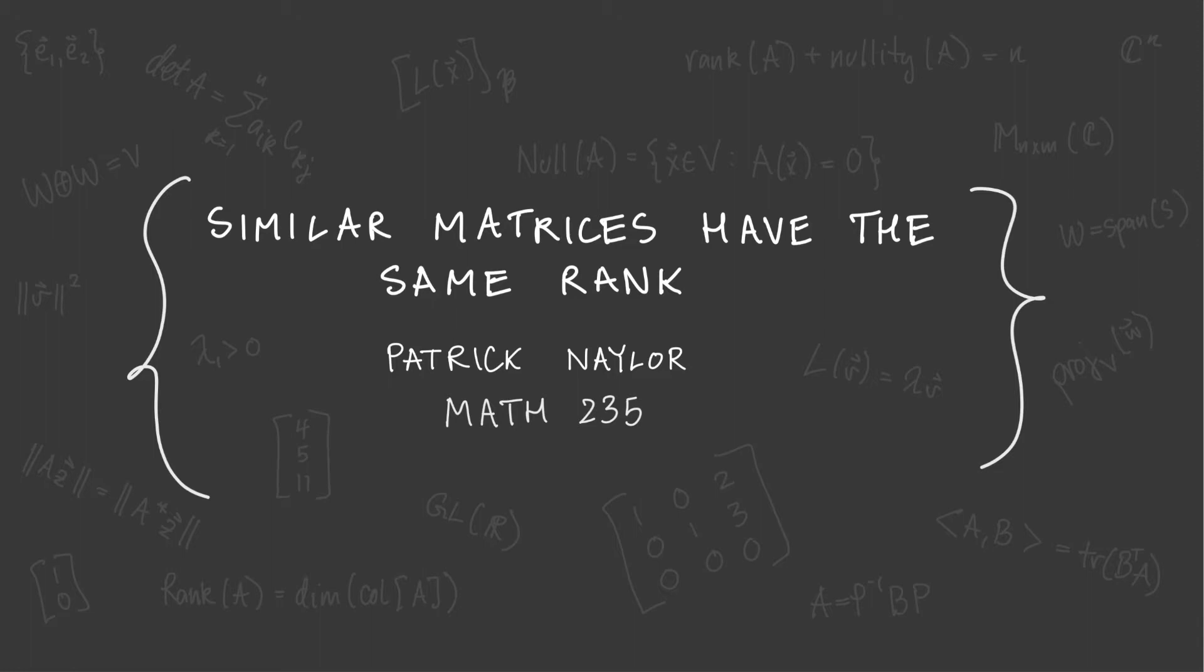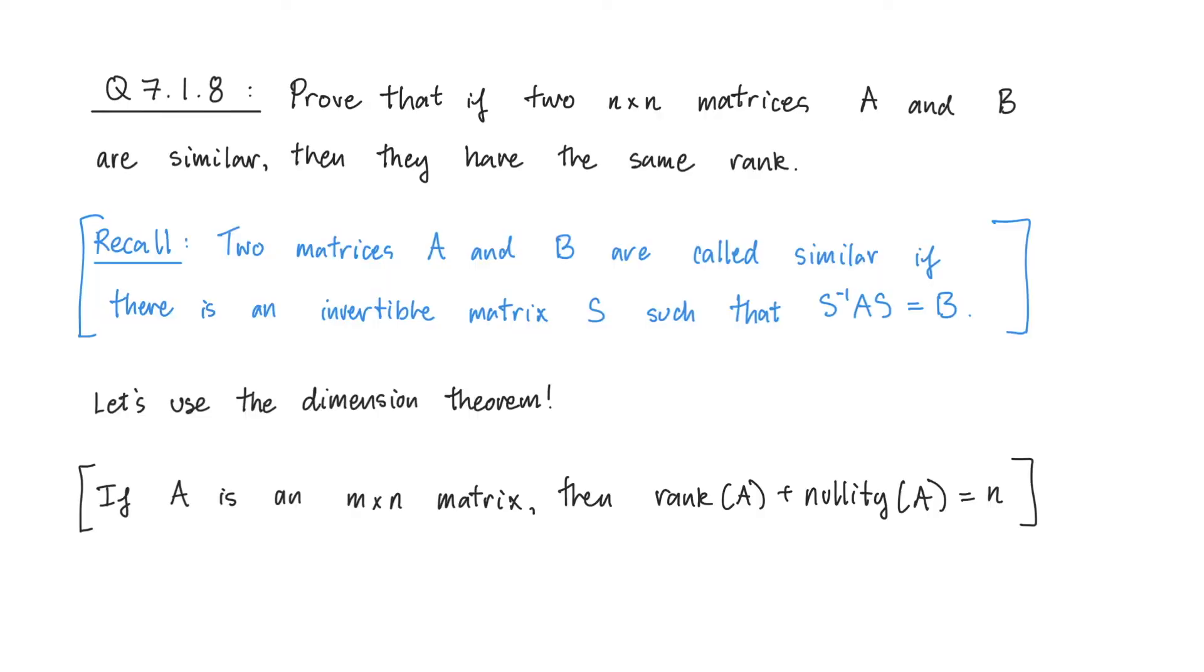In this video, I'd like to take a look at one of the problems in section 7.1. It's question 7.1.8 from the textbook, and it asks you to prove that if two n by n matrices A and B are similar, then they have the same rank.